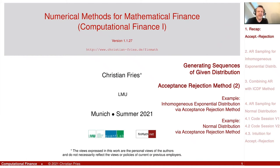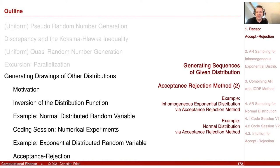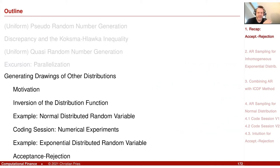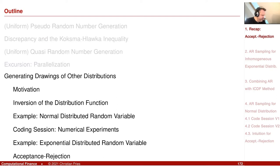Welcome to Numerical Methods. We are still in the section on the generation of random numbers. We talked about uniform random number generation, quasi-random number generation — so filling the space more evenly. Then we started a session on generating drawings of other distributions. Inversion of the distribution function was a very powerful, very popular method.